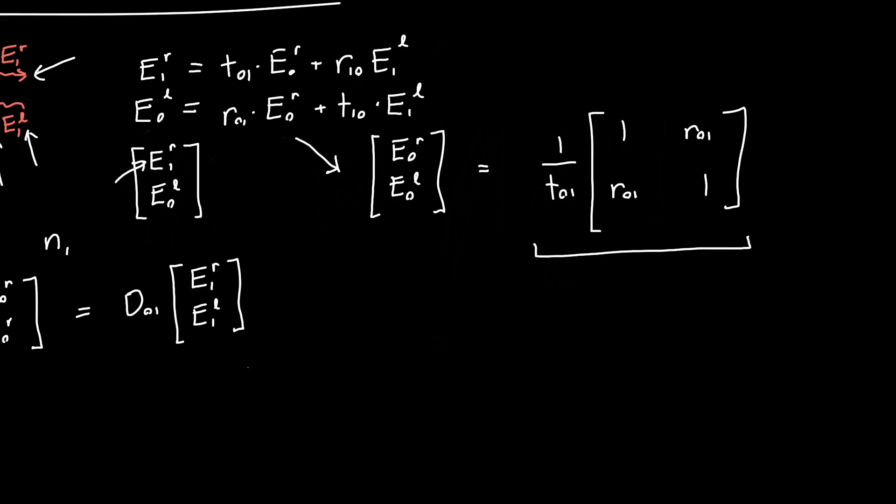And if you actually carry out the math, something, you'll notice something kind of interesting. This 1 is actually simplified from R01, R10, or T01, T10 minus R01, R10. And you can use the relationship between the transmission coefficients and the reflection coefficients to see that this simplifies to 1.